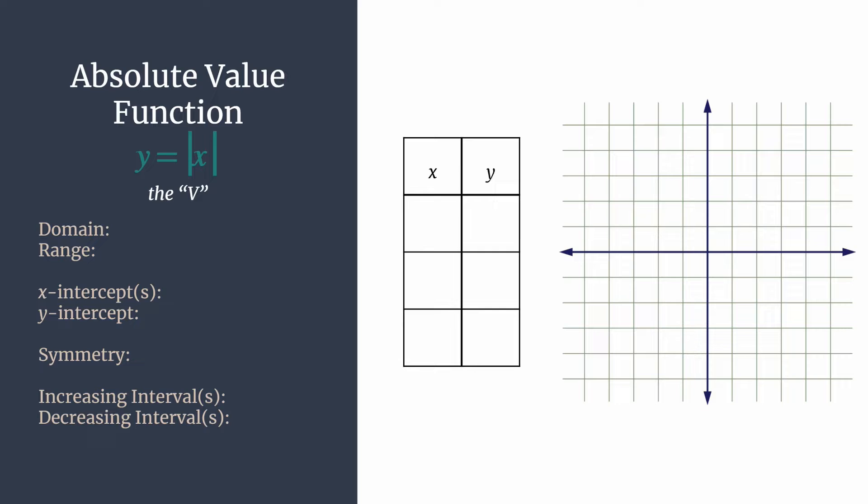In this video we're going to look at the absolute value function, or y equals the absolute value of x. That's what those vertical bars mean. I like to call this one the V graph or the V function, because we'll see in a second that's what this graph looks like. Whatever input you put into this function, the absolute value bars tell you to make it positive. Really, it's just telling you the distance that number would be from zero on a number line.